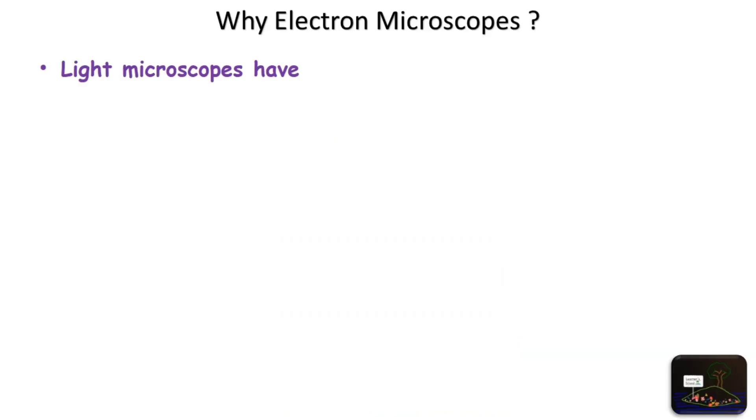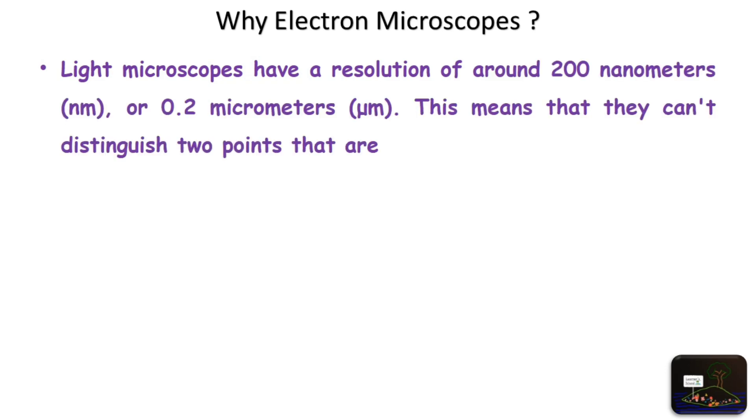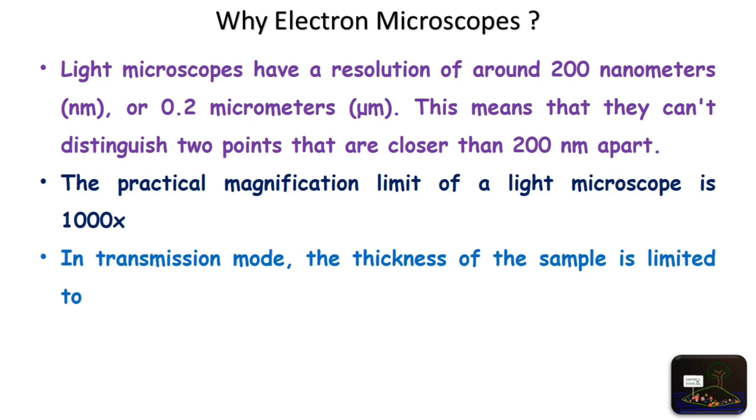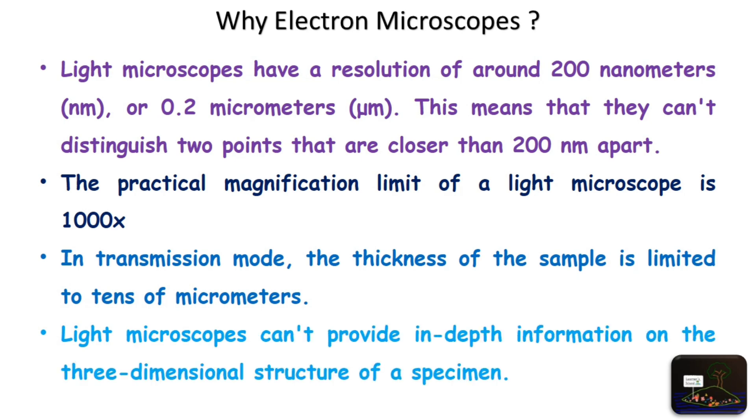Light microscope has resolution of around 200 nanometers, or 0.2 micrometers. This means, they can't distinguish two points that are closer than 200 nanometers apart. The practical magnification limit of a light microscope is 1000x. In transmission mode, the thickness of the sample is limited to tens of micrometers. Light microscopes cannot provide in-depth information on the three-dimensional structure of specimen.